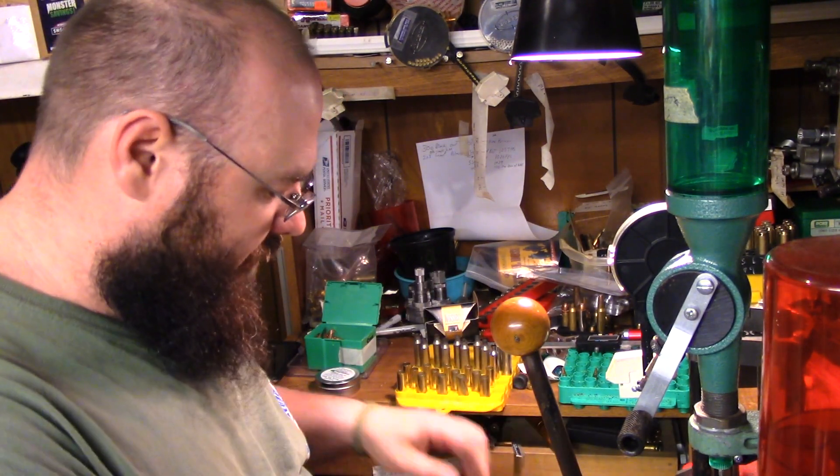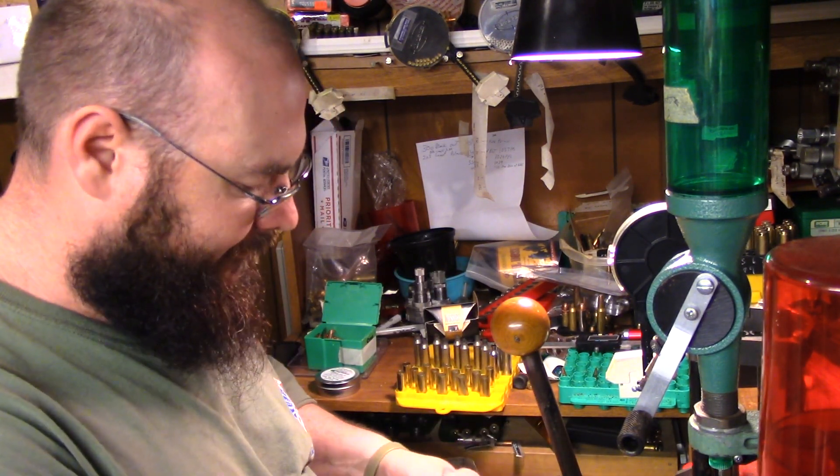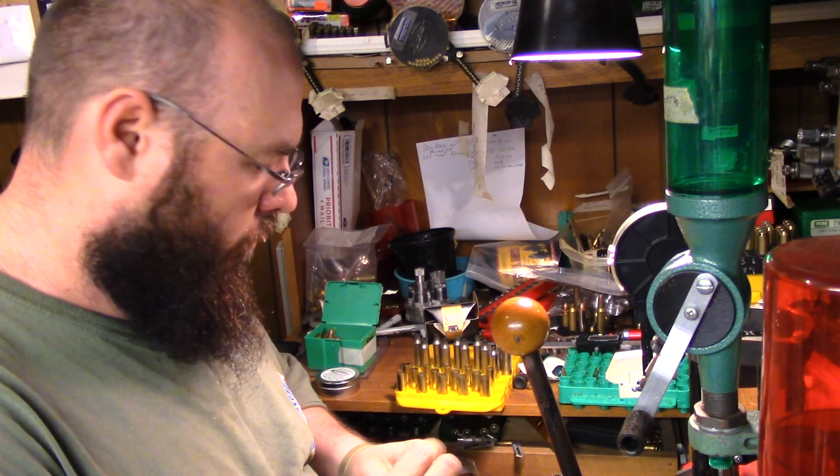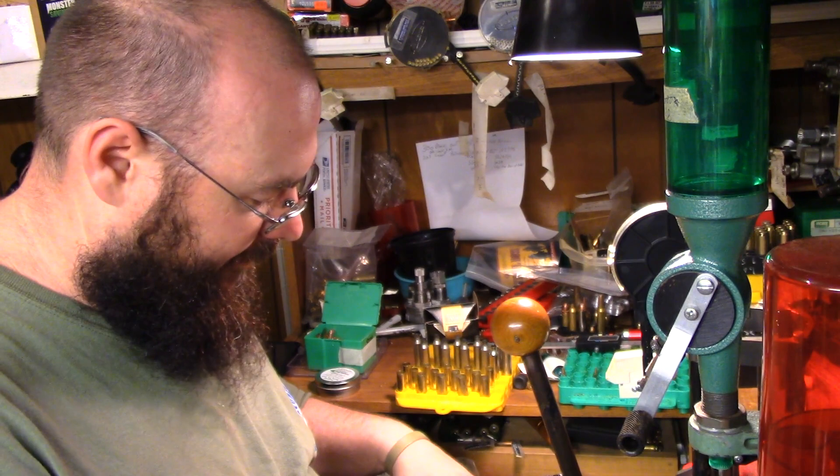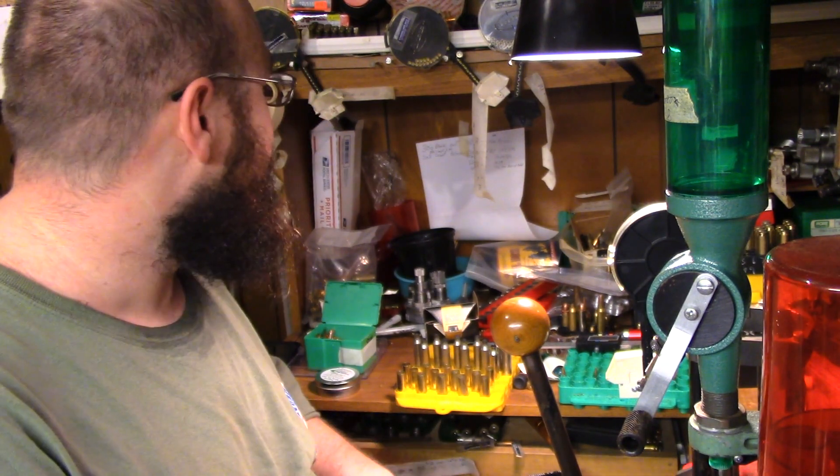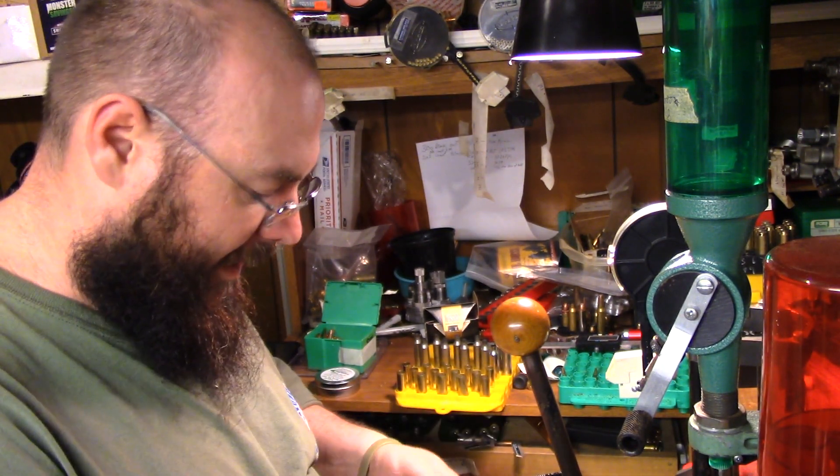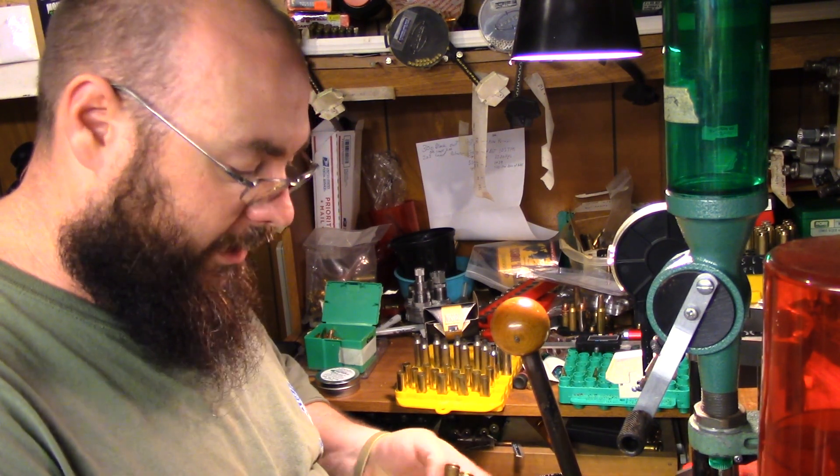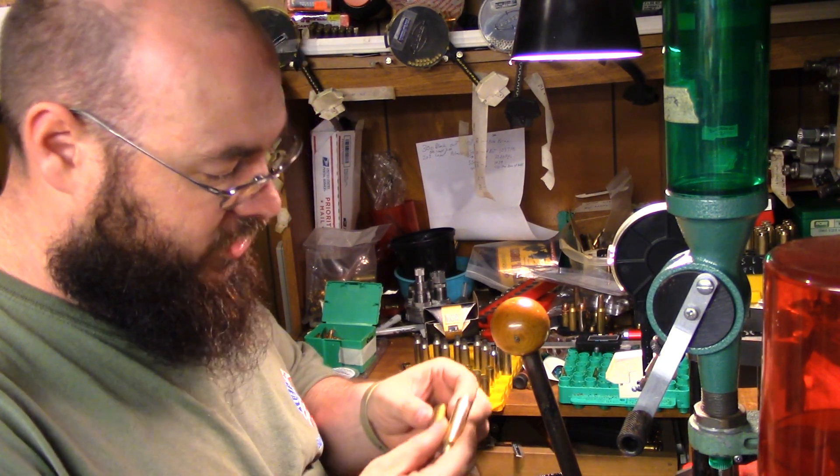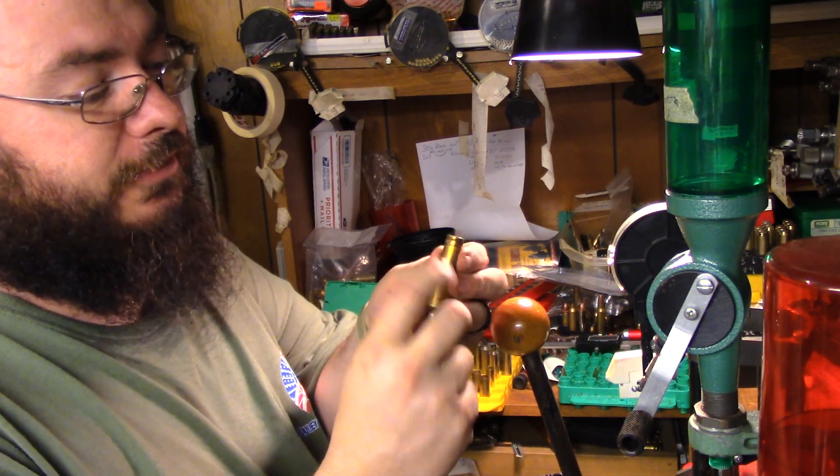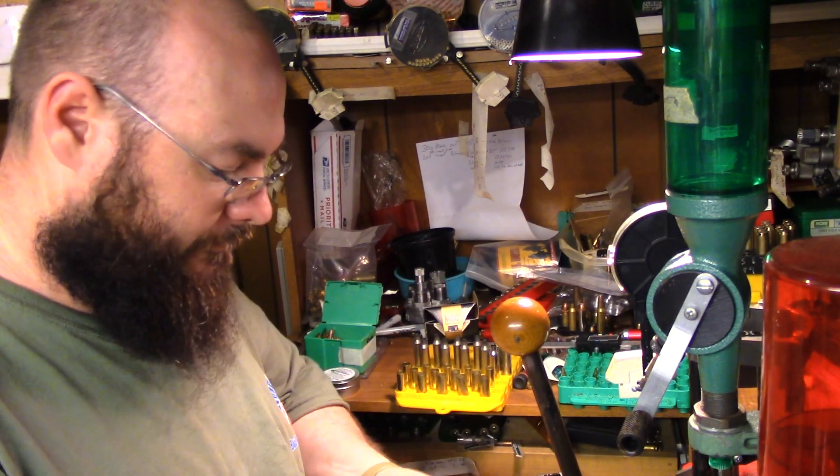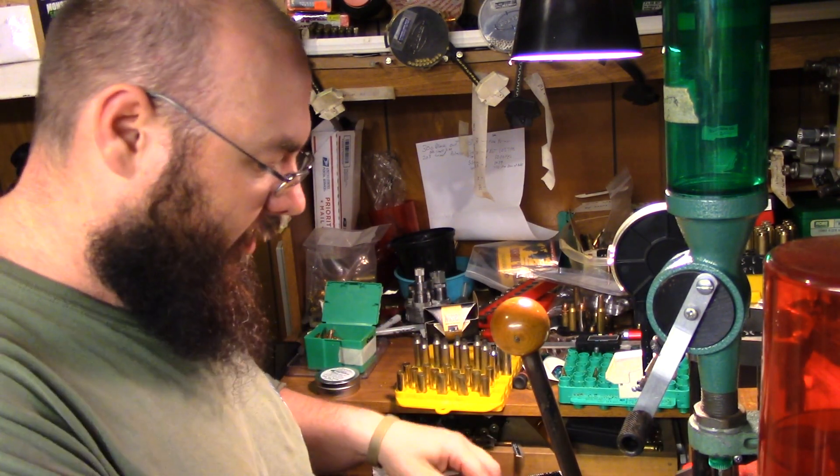I got a box of clean brass here that is stainless steel tumbled. It's not brand new brass, I got a bag of this stuff given to me by a guy that had picked it up at the range. So I went ahead and stainless steel cleaned it so that I could check around the belt to make sure there wasn't nothing going to come back and bite me in the butt there.